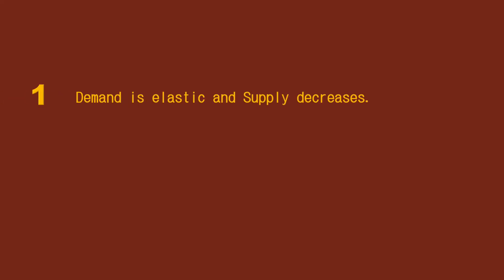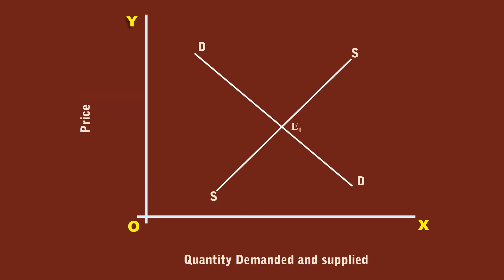1. Demand is elastic and supply decreases. To begin with, the market is in equilibrium at E1, where demand curve DD cuts supply curve SS. The price is P1. The quantity is M2.